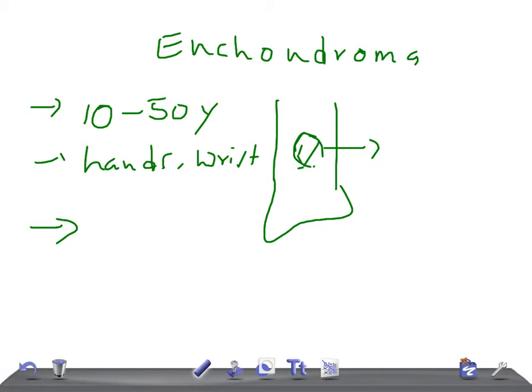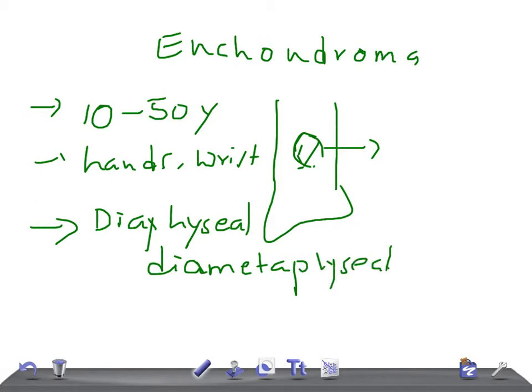What are the radiological signs? Remember, it's diaphyseal or dimetaphyseal—well-defined lucency with a thin sclerotic rim. If this is a small bone of a hand, like a proximal metacarpal, then you can see it here. Well-defined lucency with a thin sclerotic rim.